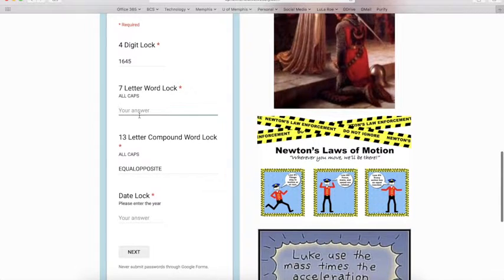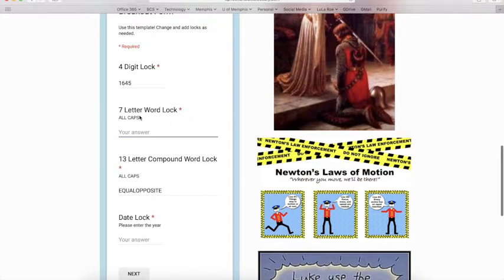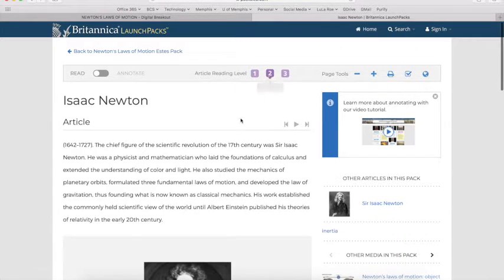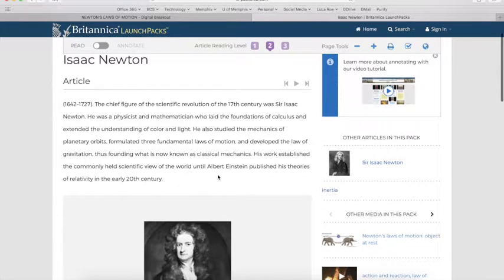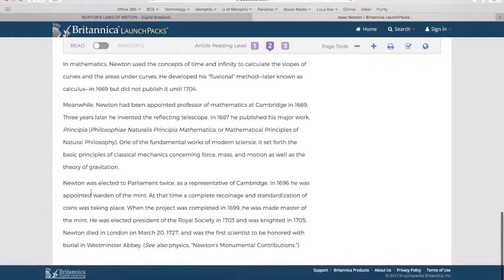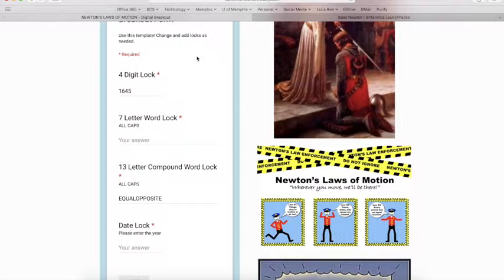The seven letter word lock goes along with actually let me go to the date lock. The date lock goes with this picture here and this is from the Britannica Launch Packs. It's set should open on the grade 6 to 8 one and they're going to have to read through this to find out the dates. There are several in here so that's going to kind of throw them off but the one that I'm looking for is when he was knighted and he was knighted in 1705. And if they're typing in something it comes up with the sir Isaac Newton the sir was meaning for knight so that is the clue there.